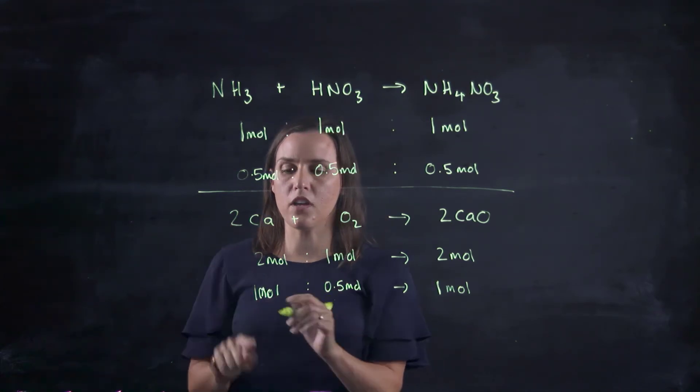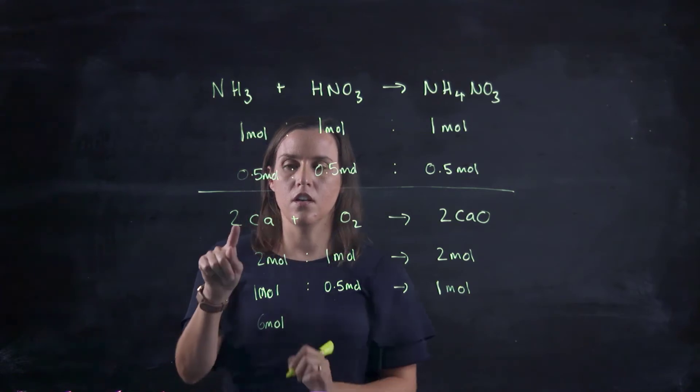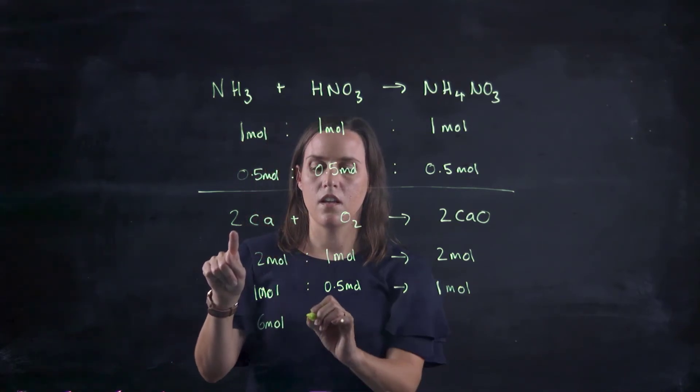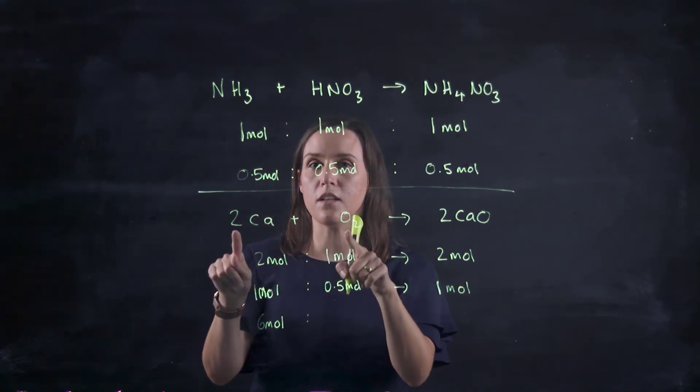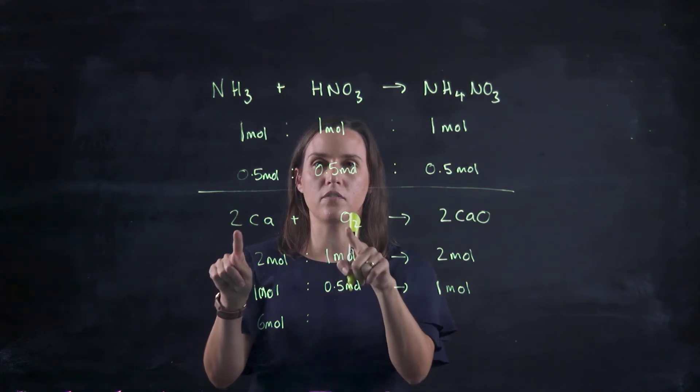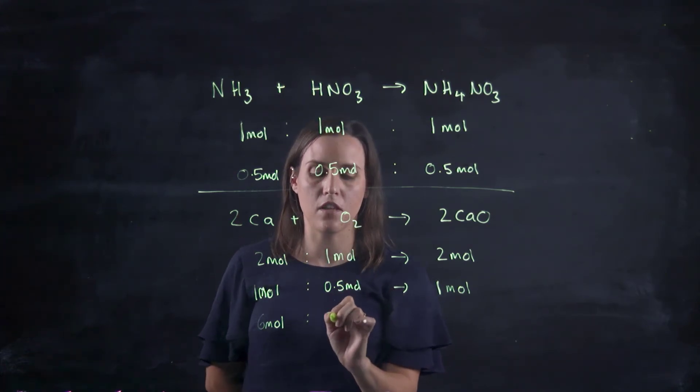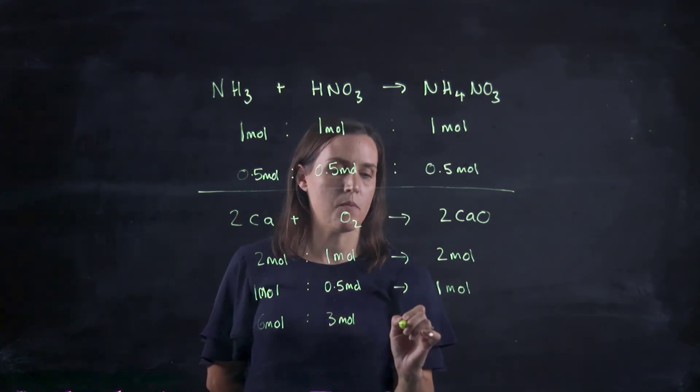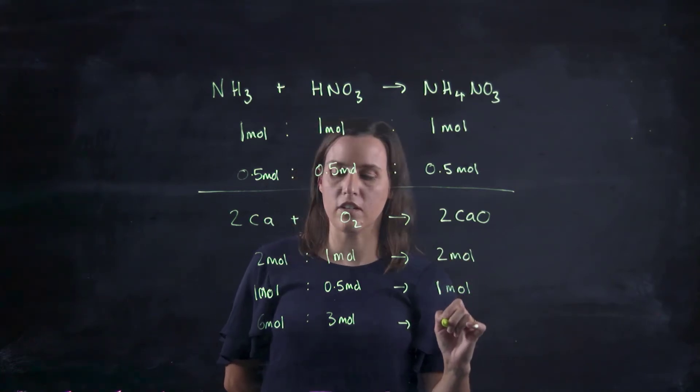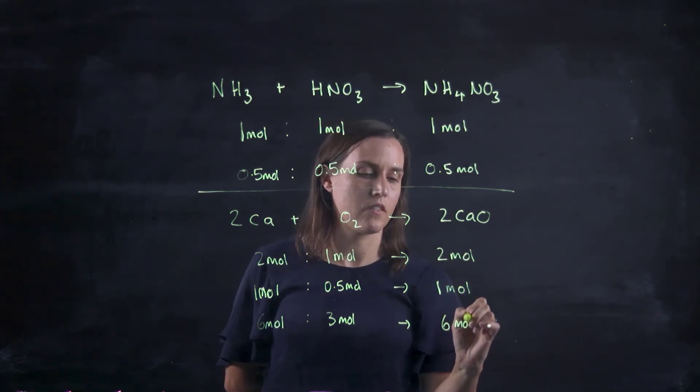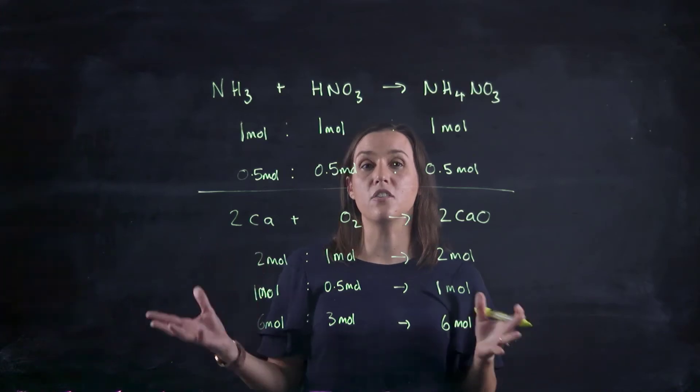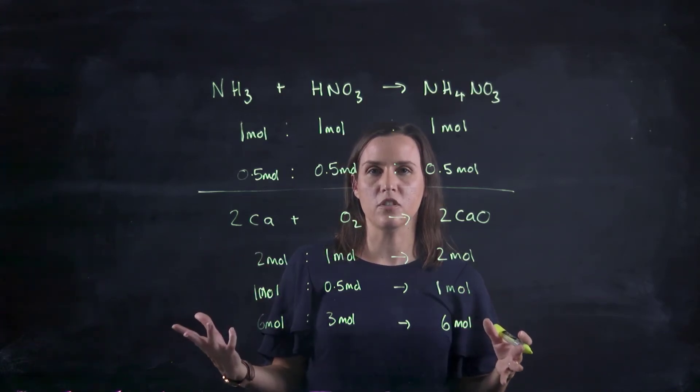So say I'm working with six mole of the calcium. Oxygen is still half that amount because it's a two to one relationship. So that's now going to be three mole. And my product is the same, so it's going to be six mole. So that's how we can use the mole and stoichiometry together.